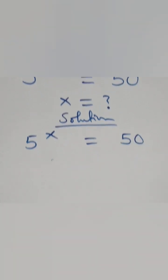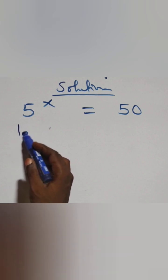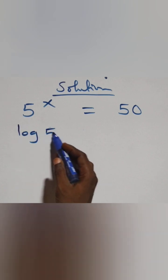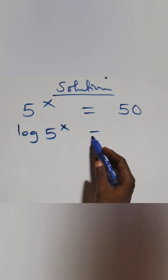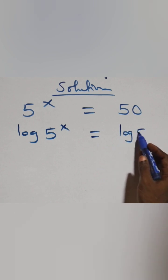Here we take the log on both sides. At this, here we have log 5 raised to power x equals to log 50 from here.